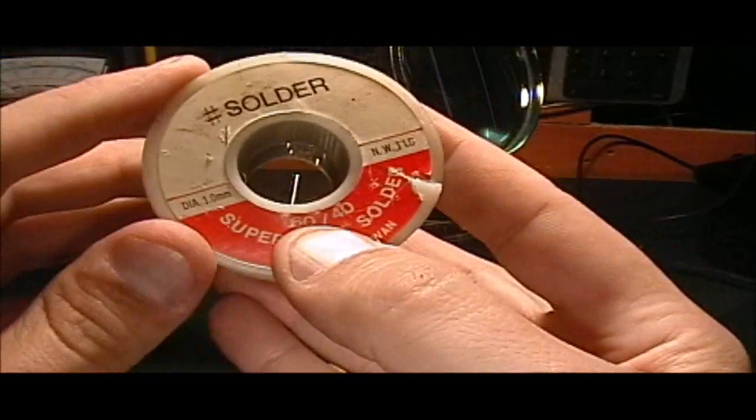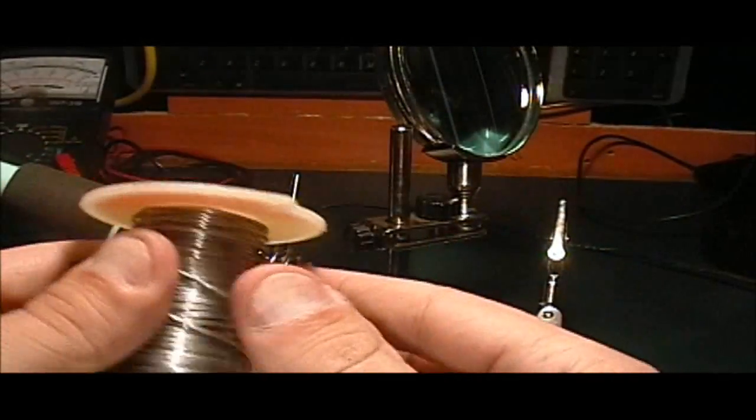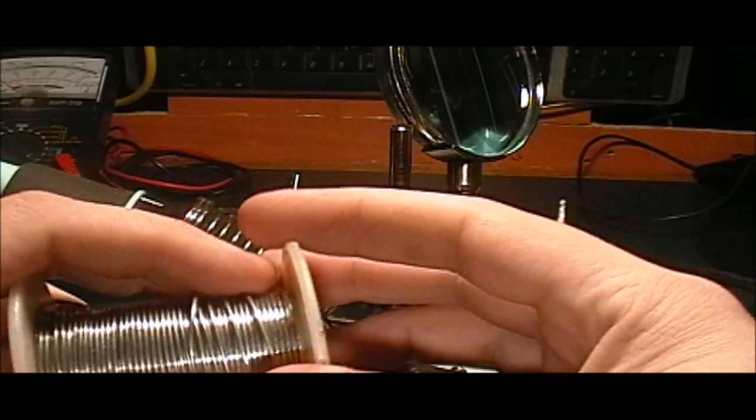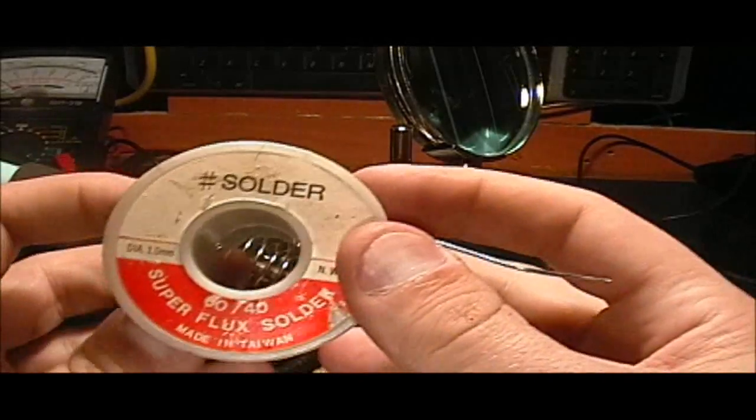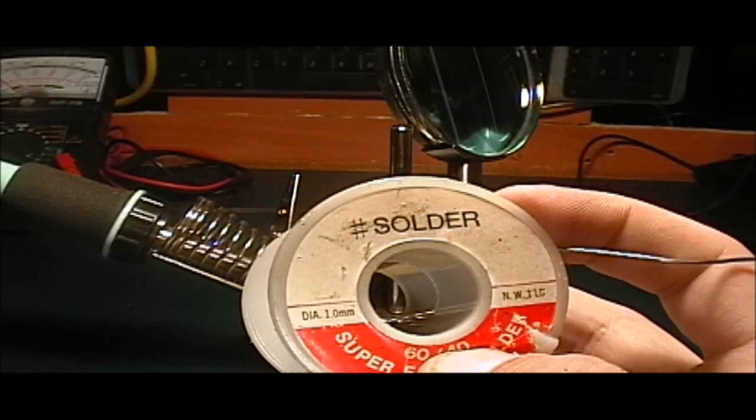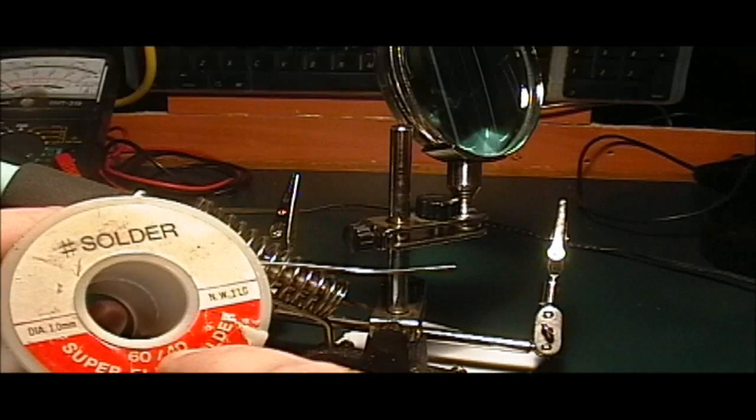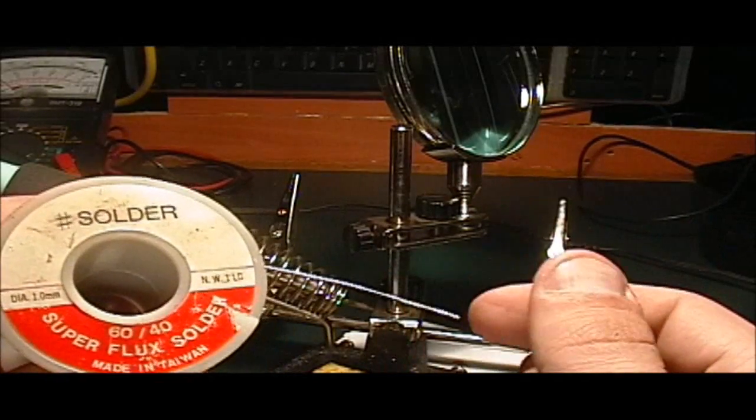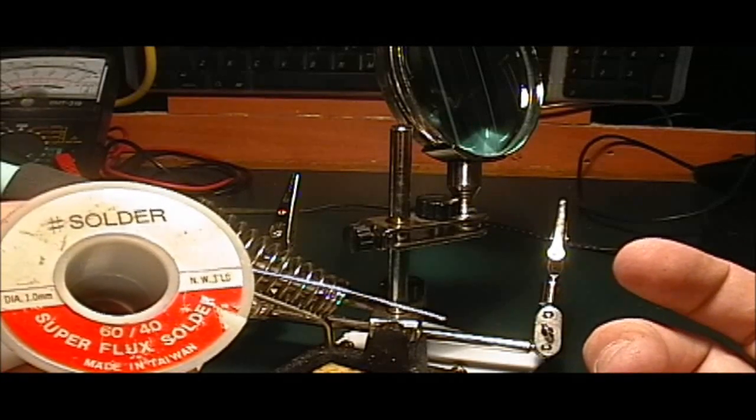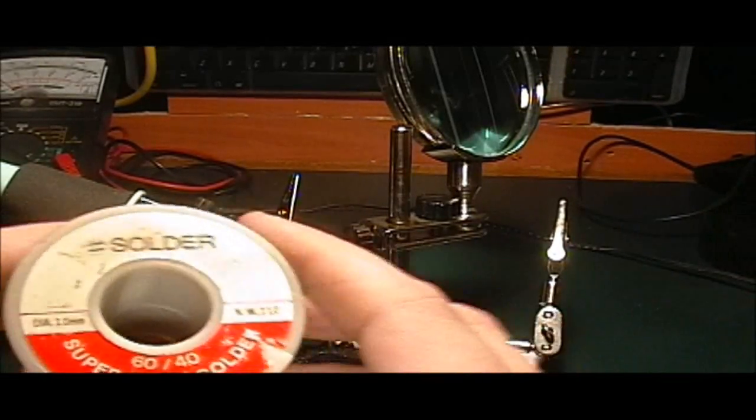This is 60-40, which means 60% tin, 40% lead. There is lead-free solder, and you're supposed to use gloves when you work with this, but I don't know anybody that actually does, nor do I know anybody that has died from touching this. 60-40 solder has a melting point of about 315 degrees Celsius. You can get different values. You can get 70-30, or even 40% tin, 60% lead. It brings the melting point up or down, depending on what you need.